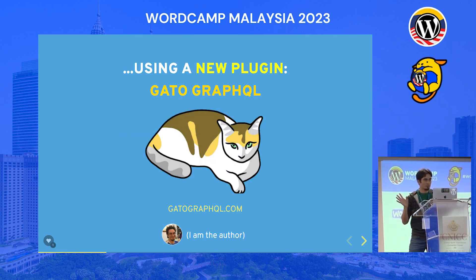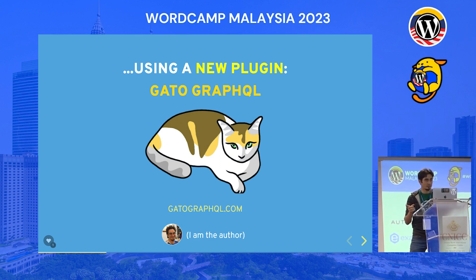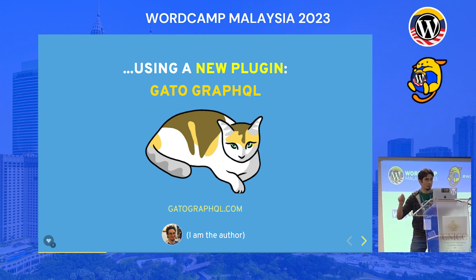So now I'm going to introduce this new plugin. It's called Gato GraphQL. You can find it at GatoGraphQL.com. It's going to be available in the plugin directory quite soon — it's right now waiting for approval. But the download link on the website is already working; it's just downloading from the GitHub repo.